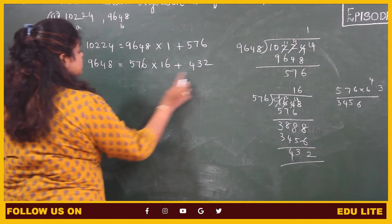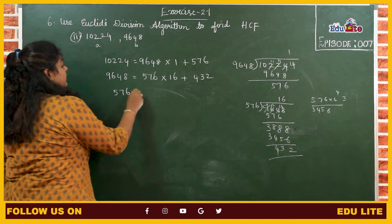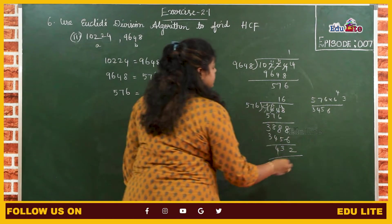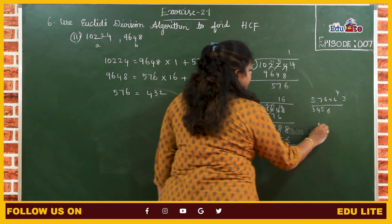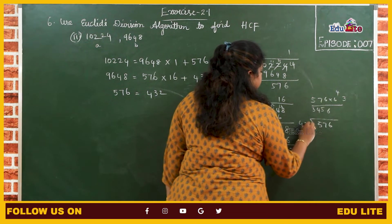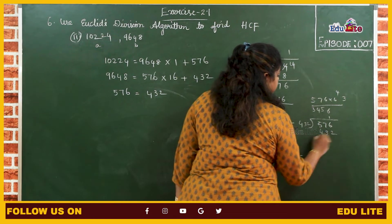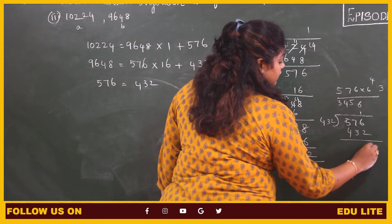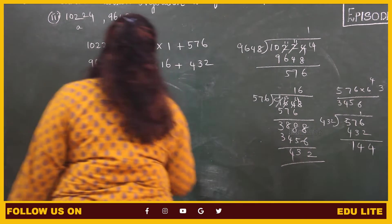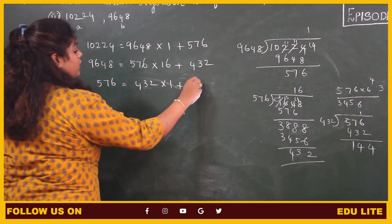Again the remainder is not 0, we have to proceed. 576 should be divided by 432. So 576 divided by 432: 1 times we can choose 432. So 432 into 1 plus 144.